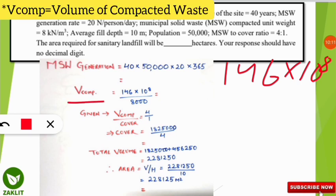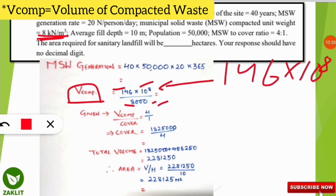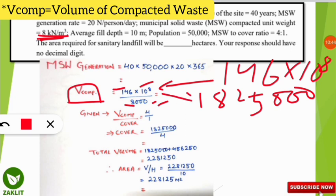Next, the compacted volume = mass ÷ density = (146 × 10⁸) ÷ 8,000 = 1,825,000 m³. Since the MSW to cover ratio is 4:1, the volume of cover = 1,825,000 ÷ 4 = 456,250 m³.